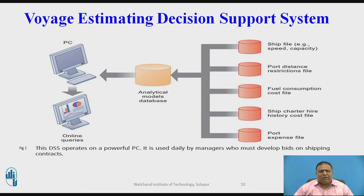Decision support systems serve middle level management, supporting a number of routine decision making tasks. For example, what is the impact on the production schedule if December sales doubled? They often use external information as well as transaction processing system and management information system data. Types include model-driven decision support systems — for example, the wage estimating system — and data-driven decision support systems, such as internet marketing and analysis systems.